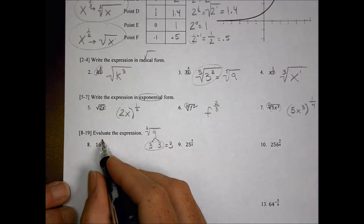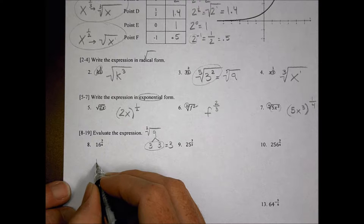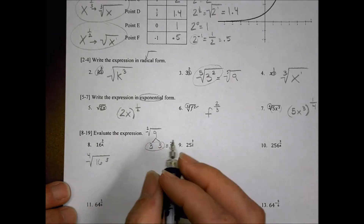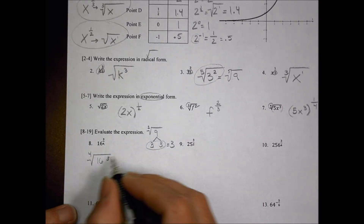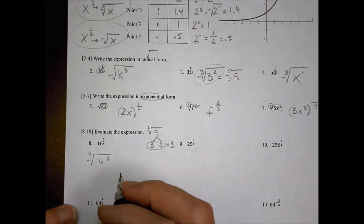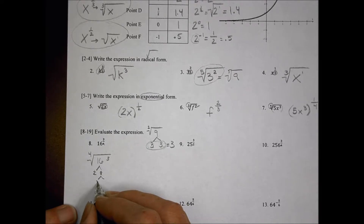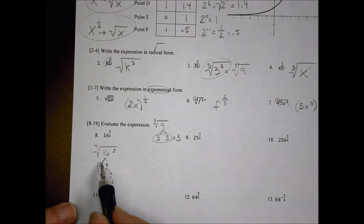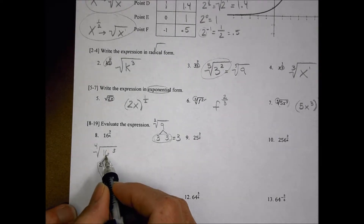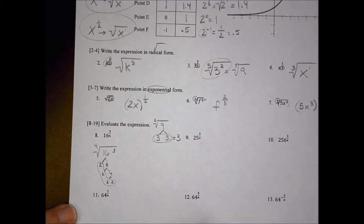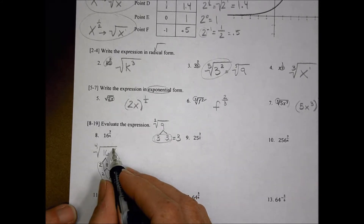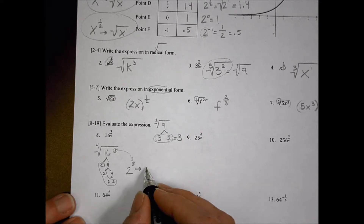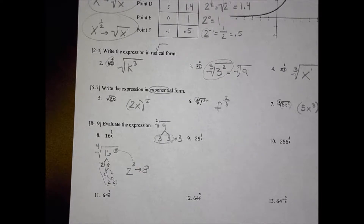For 16 to the 3 fourths power, that means I have 16 underneath a 4th root, and the whole thing is to the 3rd power. I break 16 apart: 2 times 2 times 2 times 2 — that's a cluster of four 2s. So the 4th root of 16 equals 2. But I still need to cube that result: 2 cubed is 2 times 2 times 2, which equals 8.